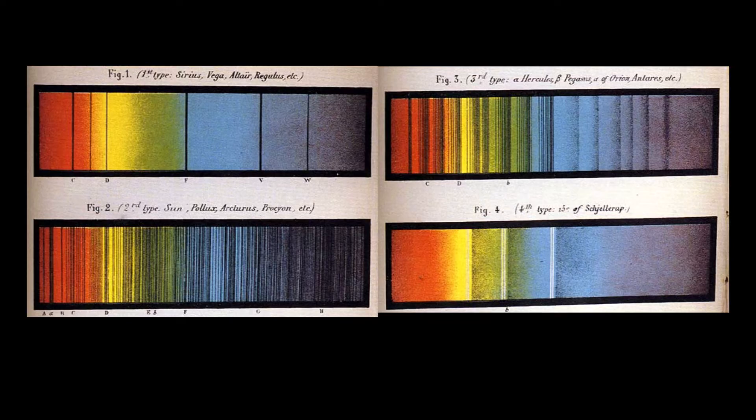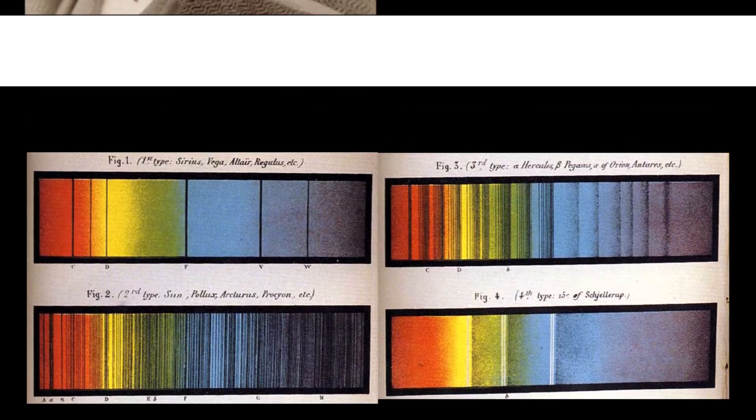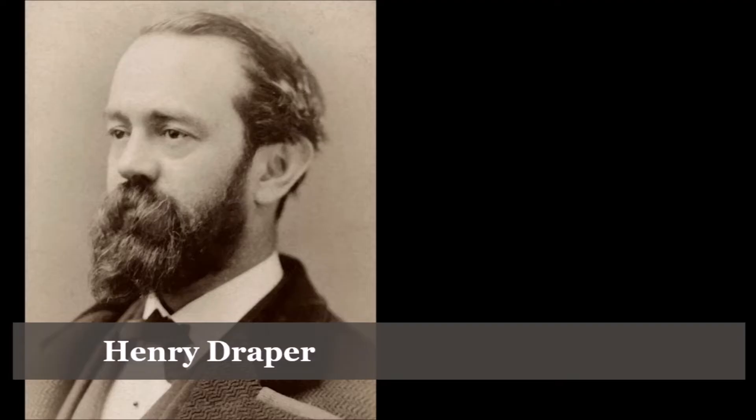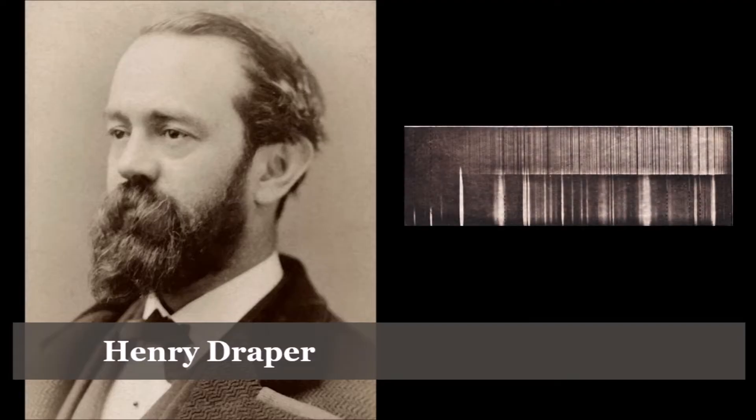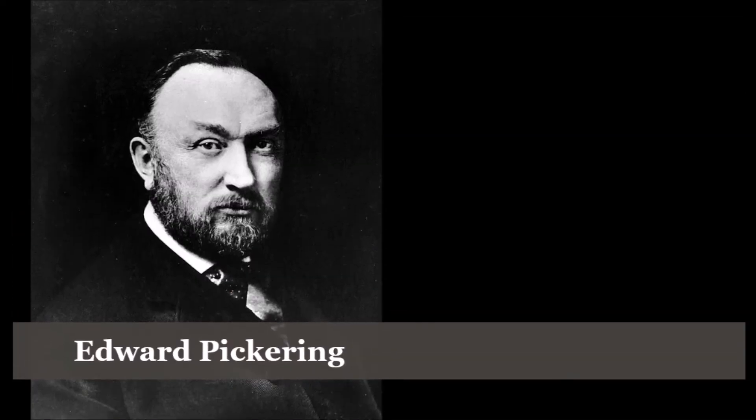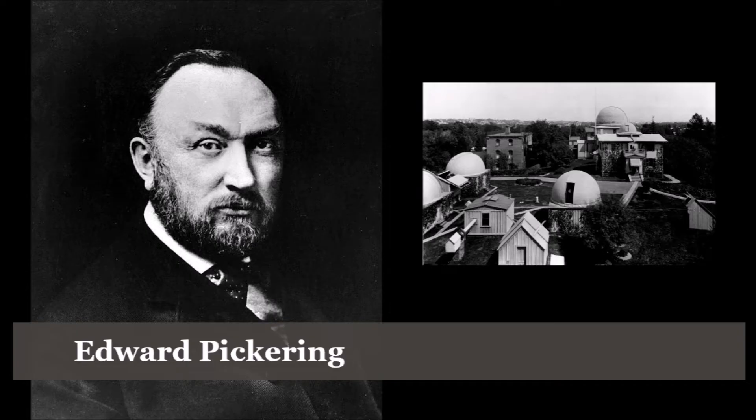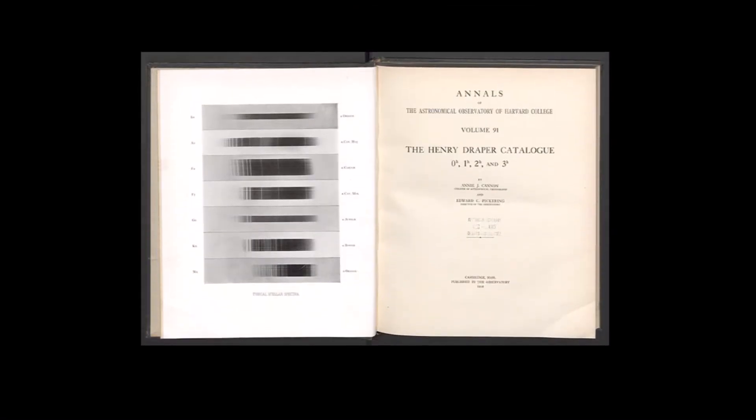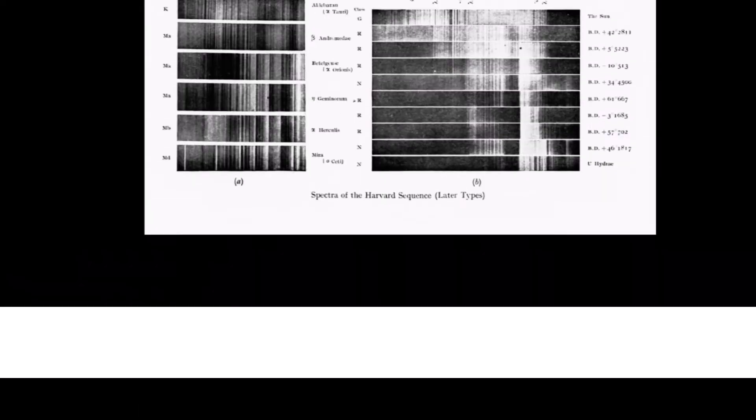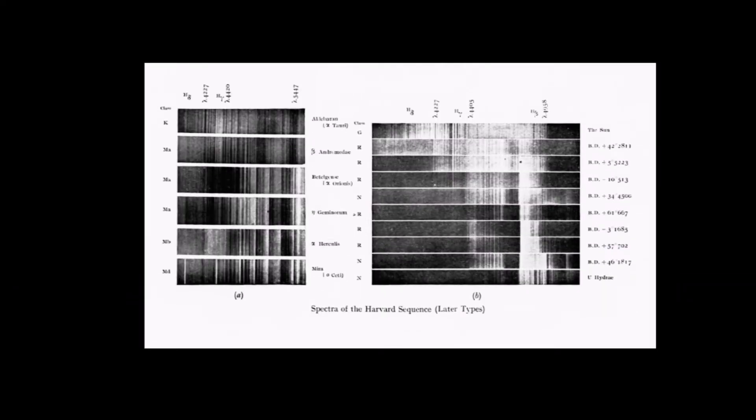They realized that stellar spectra seemed to fall into several distinct patterns and began to group stars with similar patterns together. Amateur astronomer Henry Draper began the work of photographing stellar spectra in 1872, and following his death in 1882, Edward Pickering continued it at the Harvard College Observatory. The Draper catalog of stellar spectra was published in 1890, classifying more than 10,000 stars by assigning them letters from A through O based on the strength of their hydrogen lines.